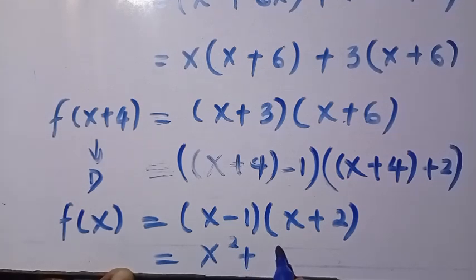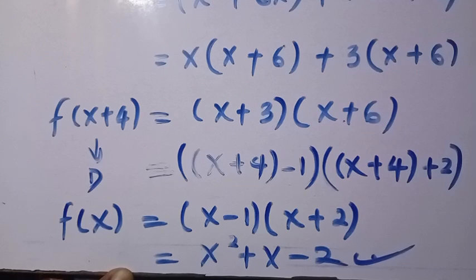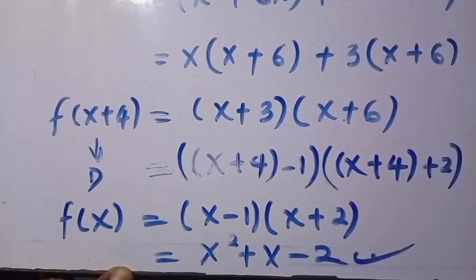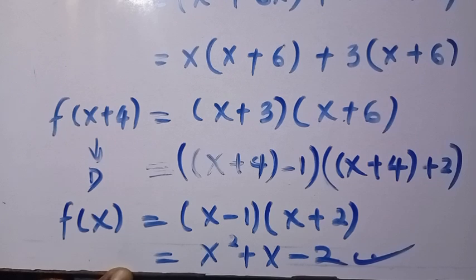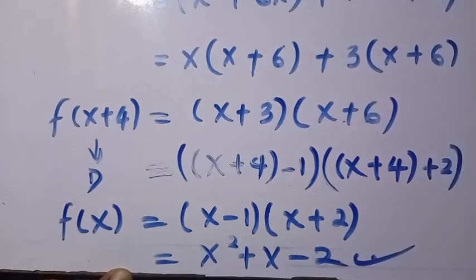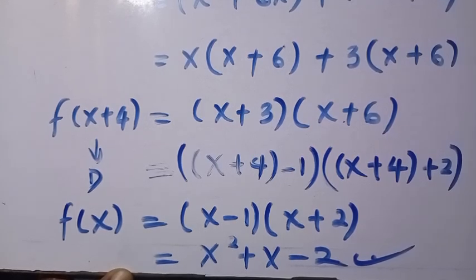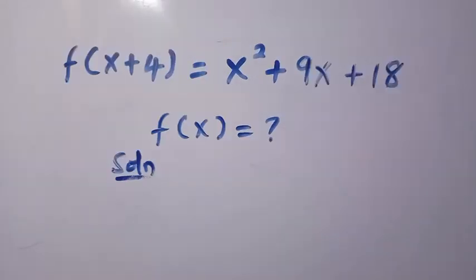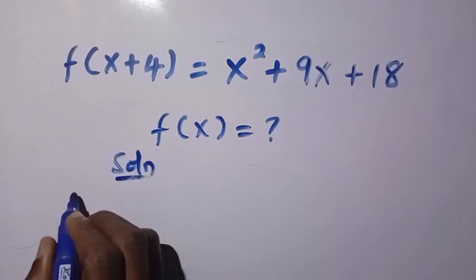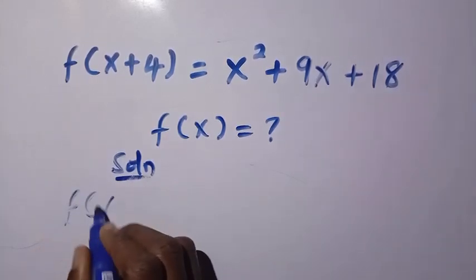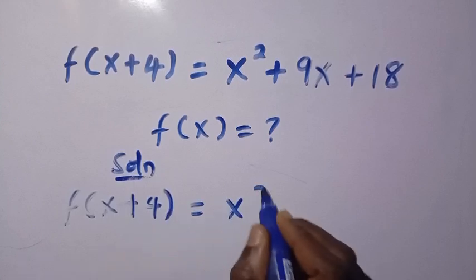Let's solve this one in another way as we are going to compare which of these is a simpler step to solve. Though both of them are very important because in this concept now we are able to understand how to factor a quadratic equation without guessing the values. Let's move into the second method. For the second method of solving this same problem, this will not take long. Here we have f(x+4) equals x² + 9x + 18.